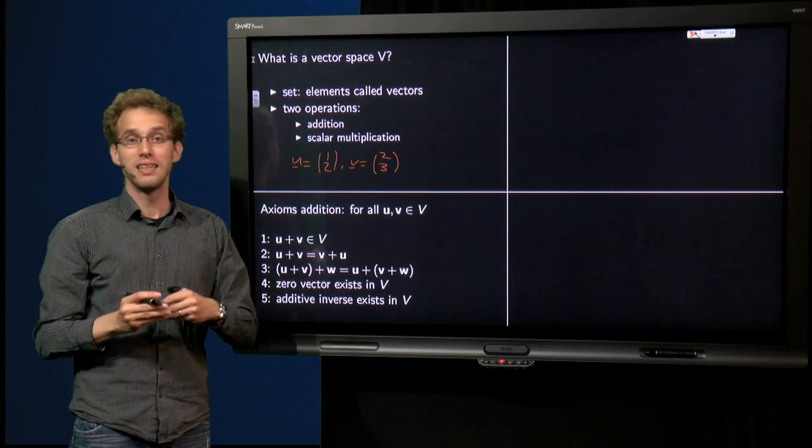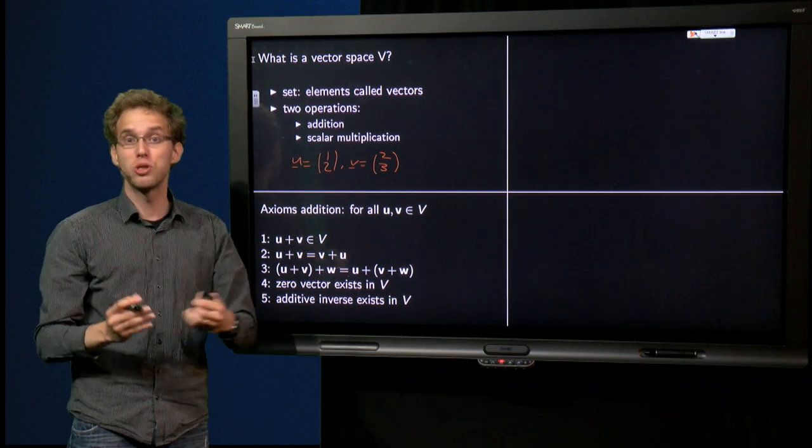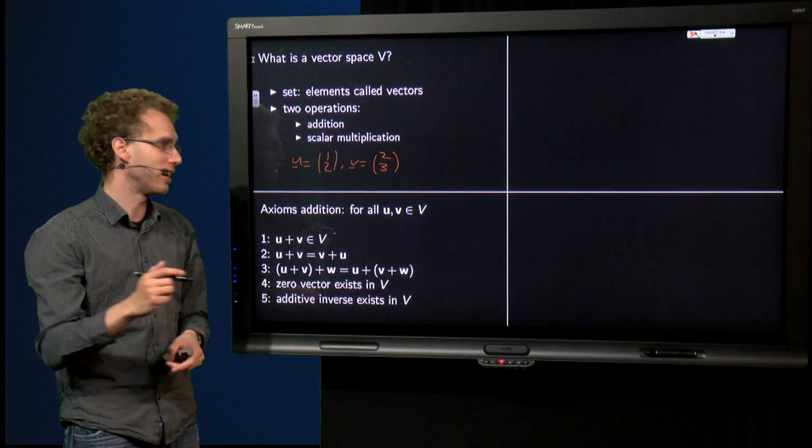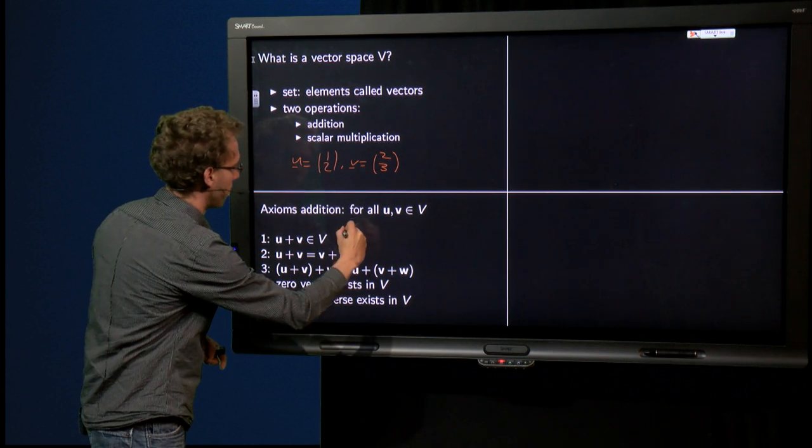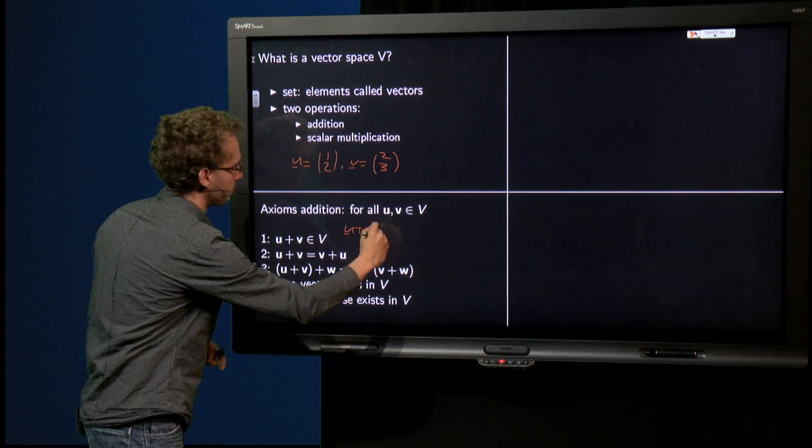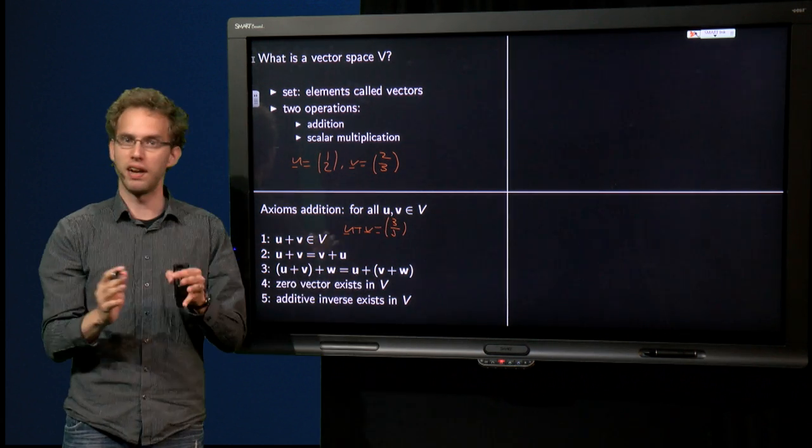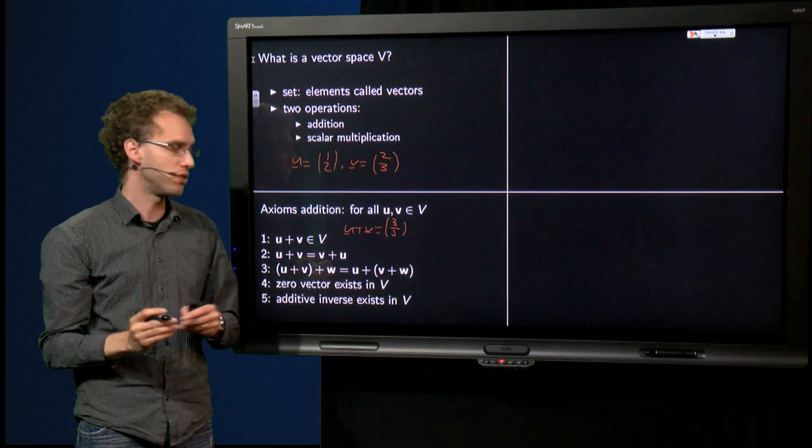We need that the vector space is closed under addition. It means that the sum of two vectors has to be again a vector. We can check that here: u plus v equals (3, 5), which is again a vector. So for vectors in R2, this is satisfied.